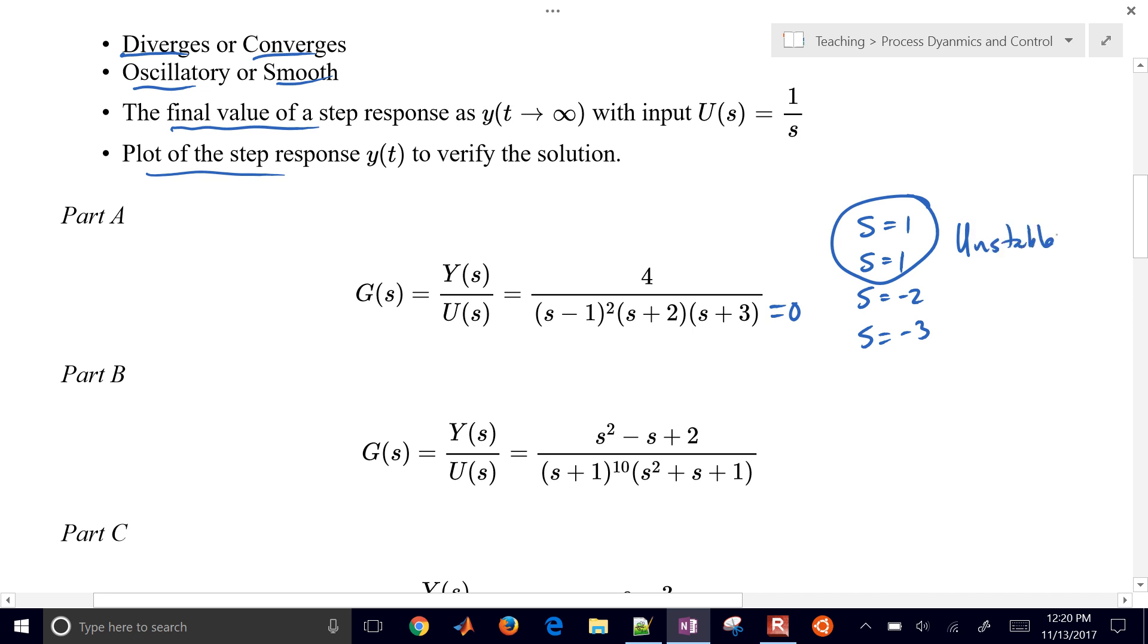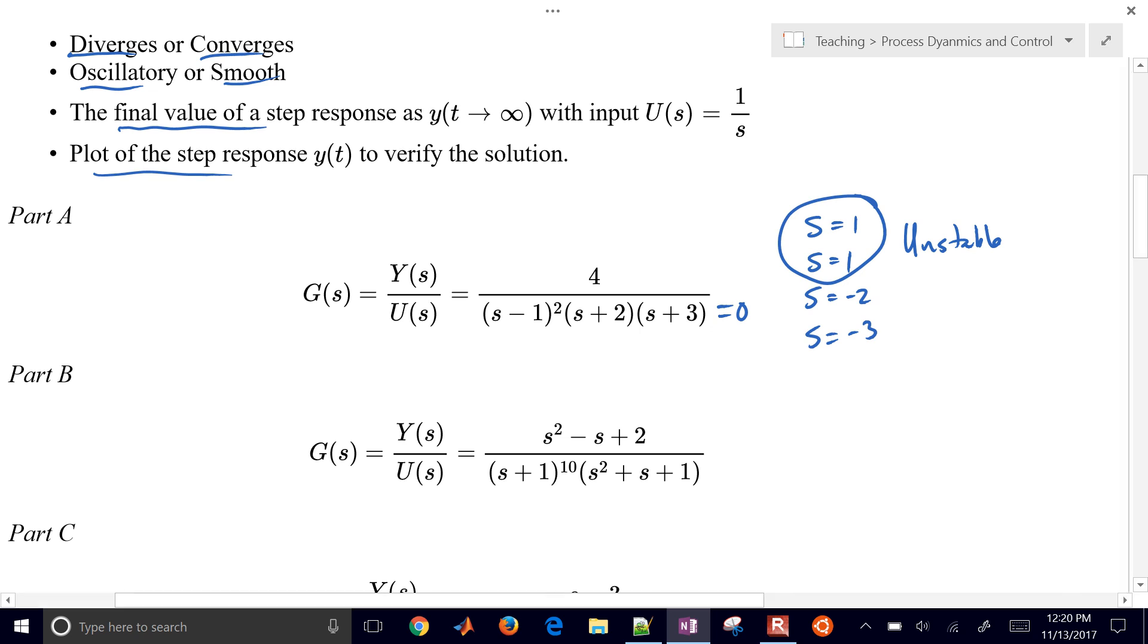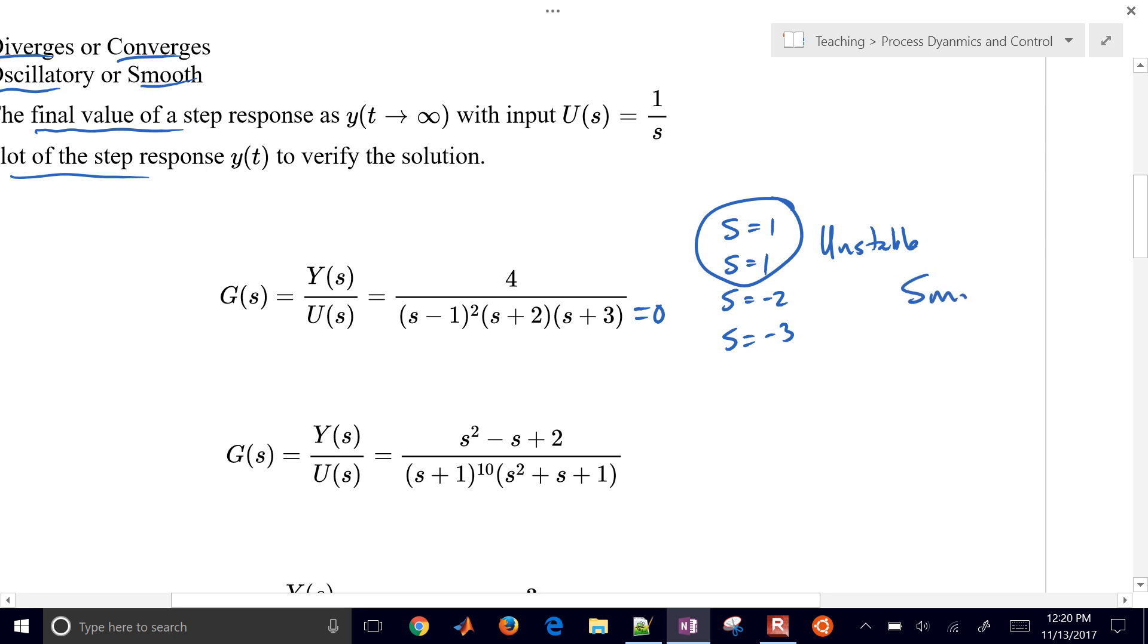And then we can know if it's going to oscillate or be smooth. If it has any imaginary parts, it's going to oscillate, and you'll always have those in pairs. So the imaginary parts are like a plus or minus 3i or something like that, but this one is going to be smooth because there are no imaginary parts.